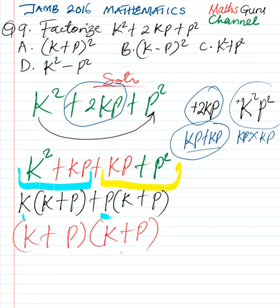k plus p multiplied by k plus p is the same thing as k plus p square. Therefore, the correct option is A, k plus p square. Thanks for watching MathGuru's video.